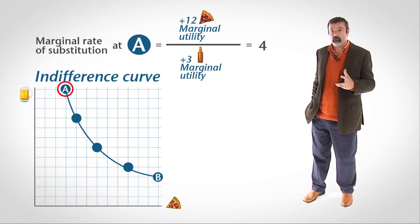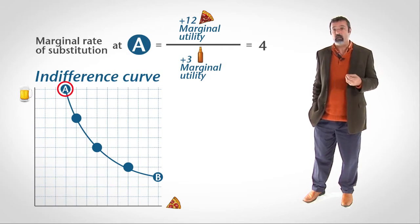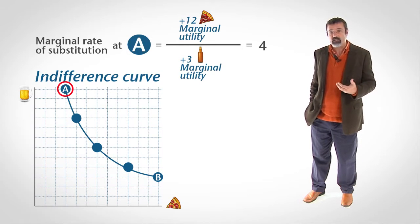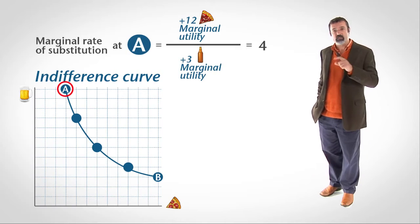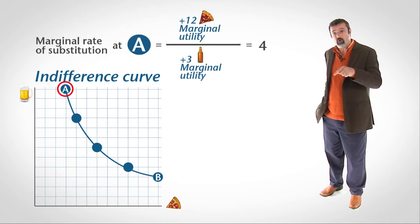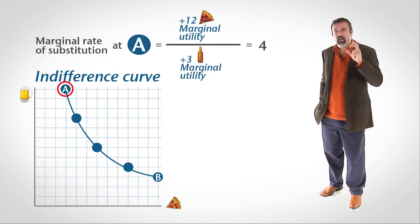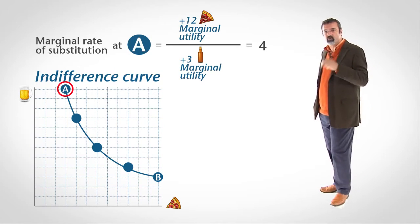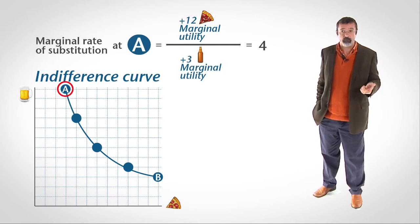Why would you have to gain so many beers just for losing one pizza? At bundle A, you are consuming a lot of beer and only a little pizza. We know that the more beer you consume, the lower is your marginal utility of beer. At bundle A, you are consuming a lot of beer, so the marginal utility from one more beer is low. But you are also consuming little pizza, so the marginal utility from one more pizza is high, and the marginal utility you lose from consuming one fewer pizza is high. Because you are consuming so much beer and so little pizza, the utility you gain from one more beer is far less than the utility you lose from one less slice of pizza. So in order to maintain constant utility, you are going to have to receive more than one beer in exchange for losing one slice of pizza.